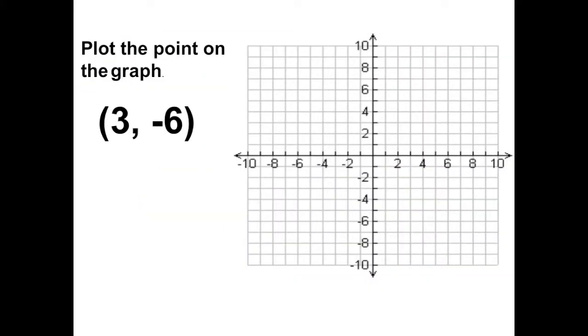Plot the point on the graph. Our first number always represents our x-coordinate, our second number represents our y-coordinate. The horizontal line on the graph is our x-axis and the vertical line is our y-axis.